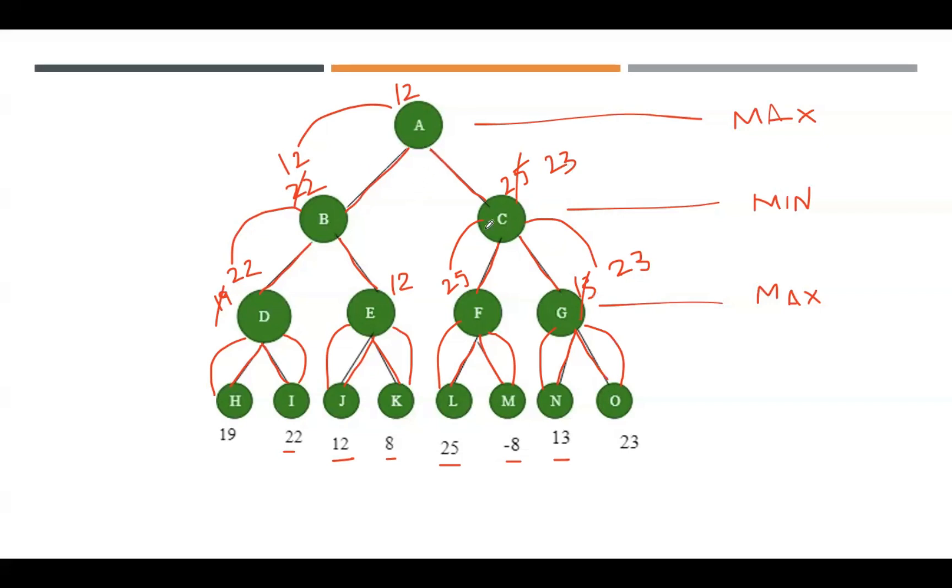Here the algorithm has traversed the left and right part of parent A. This 23 is sent back to parent node A. Among 12 and 23, which is the maximum value? The maximum value is 23, so that value will be replaced at the root node. Now the root node contains 23.